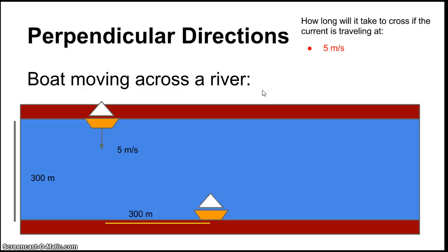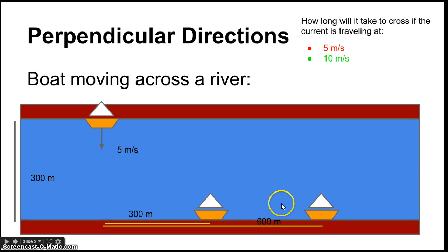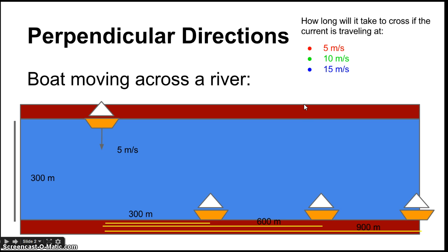The fact that the river is moving at five meters per second means the boat does end up moving faster overall — it goes further — but it still takes 60 seconds to cross. If the river goes even faster, say 10 meters per second, the boat ends up 600 meters downstream: 60 seconds times 10 meters per second equals 600 meters. How long it takes to cross is only determined by the boat's speed across the river.